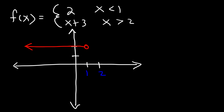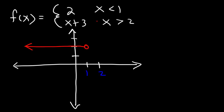At x equals 2 we're going to have the graph x plus 3. This particular graph has a y-intercept of 3 and a slope of 1. When x is 2, this graph is going to be at 5, so it's going to start up there and then increase at a 45 degree angle with a slope of 1. There are no closed circles in this example because there's no underline with the inequality — it's just x is less than 1 or greater than 2.